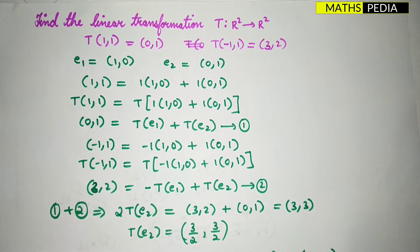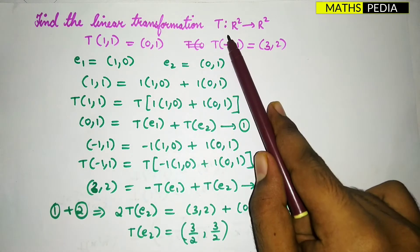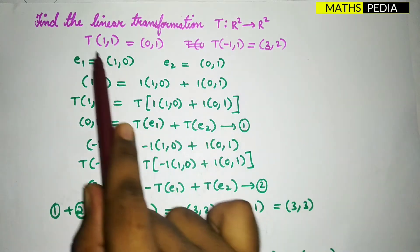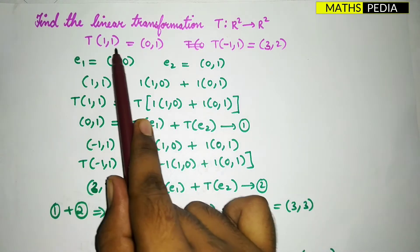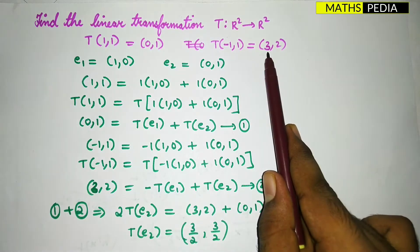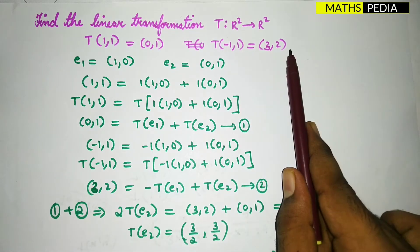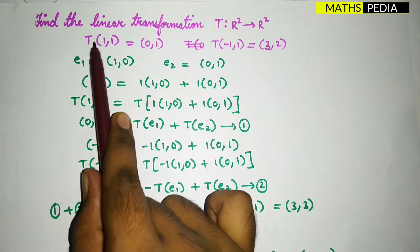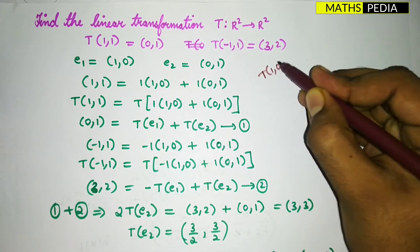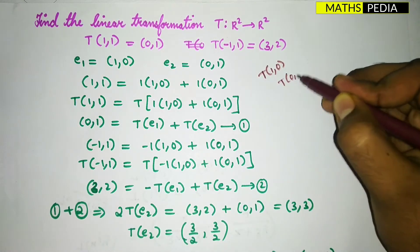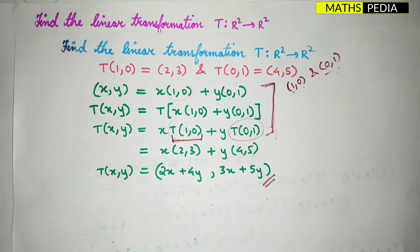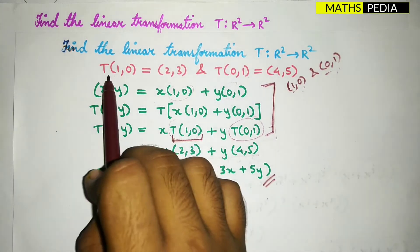The second question: find the linear transformation T: R²→R². Two elements are involved. T of (1,1) equals (0,1), and T of (-1,1) equals (3,2). Observe carefully that T(1,0) and T(0,1) are not given here, unlike the previous problem.